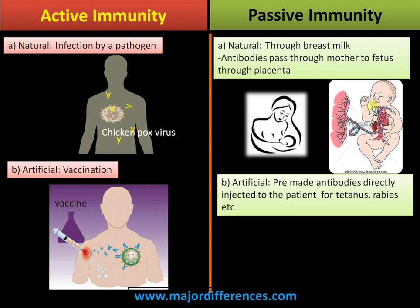In artificial passive immunity, pre-made antibodies are directly injected into patients for diseases like tetanus, rabies, snake biting, etc.